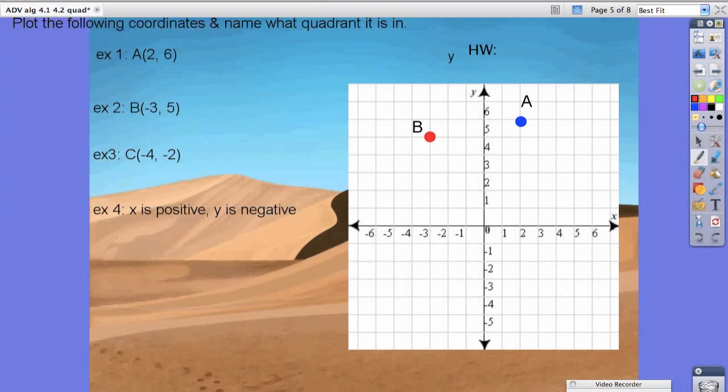Point C. By now you should probably be familiar with what we're going to do next. Start at the origin. Your x value is negative 4. That means left 4 because it's negative. And your y value is negative 2, so down 2. 1 and 2. We're going to call that point C.